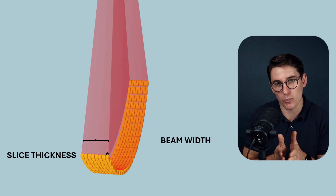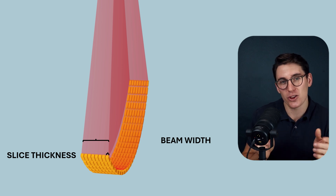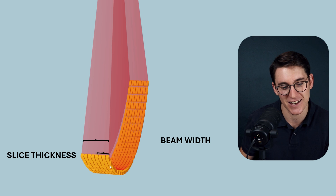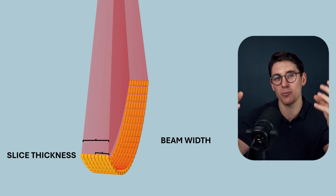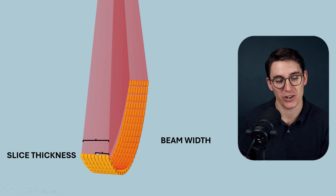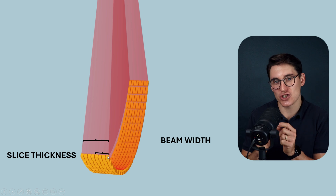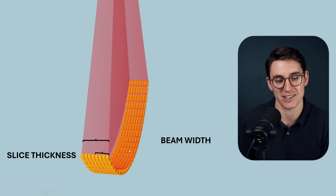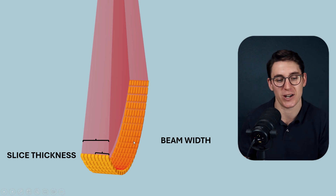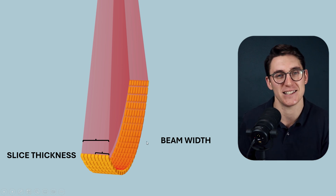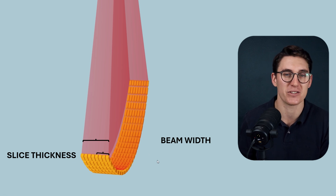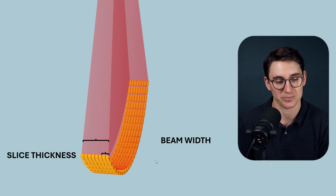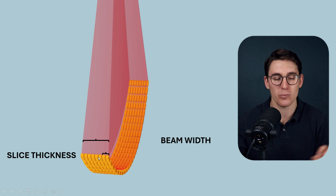If we want more signal, we can bin those detectors together — group adjacent detectors and count them as one — so we're getting more signal and a better signal-to-noise ratio. It's the width of the detectors used to generate a single slice that determines the slice thickness, not the beam width we've collimated onto our detectors. This is a function of multi-detector CT. The slice thickness can change depending on the number of detectors used to create each axial slice. It's incredibly important to understand the difference between beam width and slice thickness.